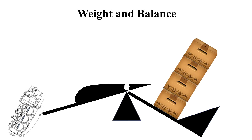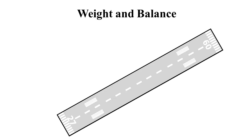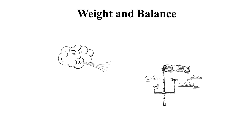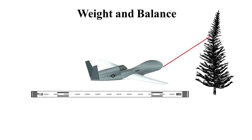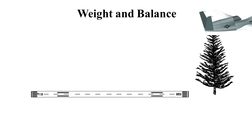Operating above the maximum weight limitation compromises the structural integrity of the aircraft. Conditions that affect takeoff and climb performance, such as high elevations, high air temperatures, and high humidity, may require reduction in weight before flight is attempted. Other factors to consider prior to takeoff are runway launch area length, surface slope, surface wind, and the presence of obstacles. These factors may also require reduction in weight prior to flight.